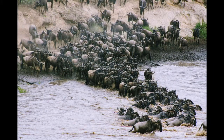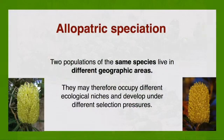Alternatively, the populations might simply migrate in different directions and settle in separate areas. These are both examples of allopatric speciation.